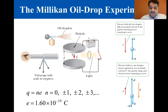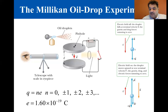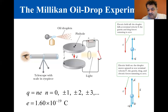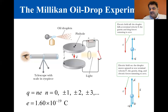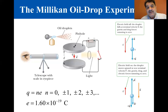It was later established that positive integer multiples of e arise when an oil droplet has lost one or more electrons. In the same way, negative integer multiples of e arise when a drop has gained one or more electrons. The fact that these gains or losses were in integral numbers provided conclusive evidence that charge is quantized.